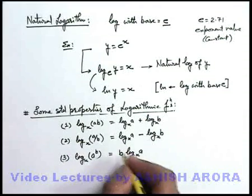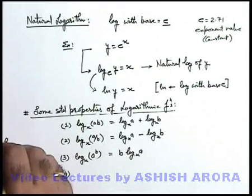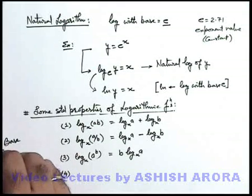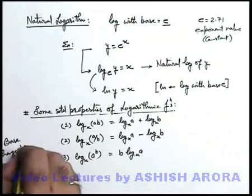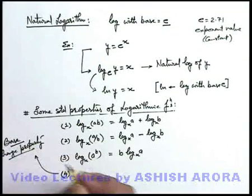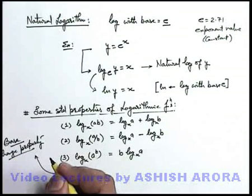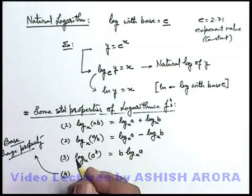These are the three fundamental properties, and there is a fourth property, which is a special property, which we also call base change property. This is also quite extensively used in physics as well as in differentiation of logarithmic functions also.